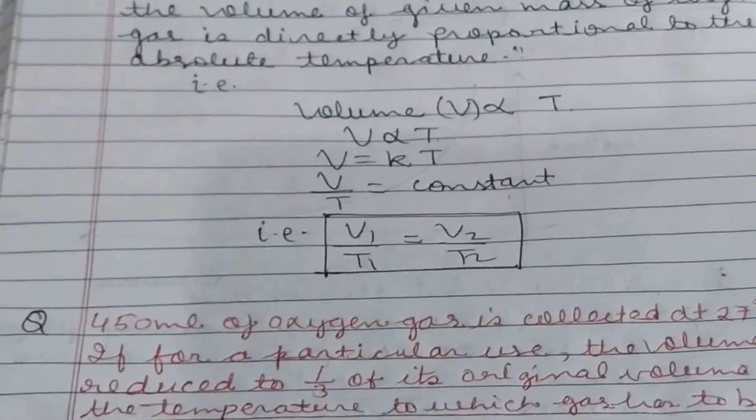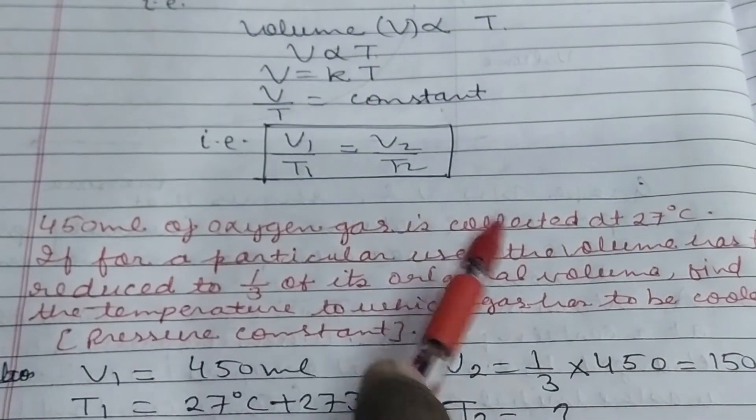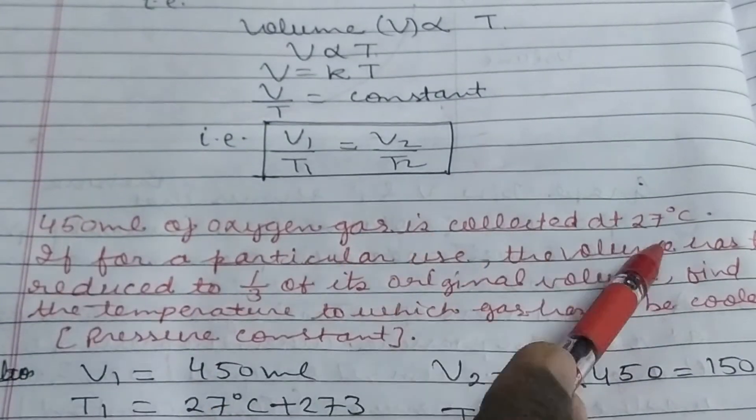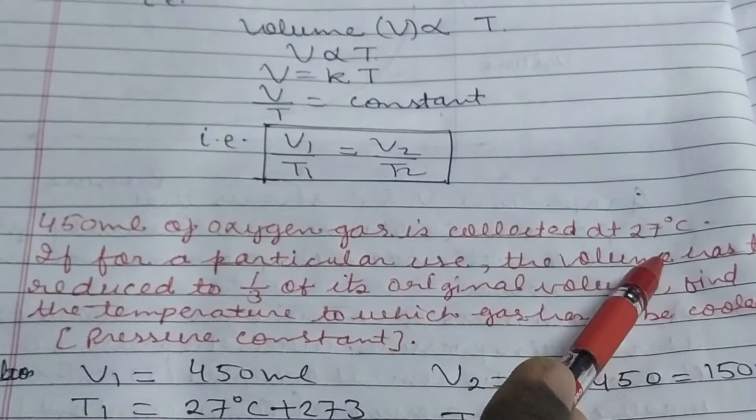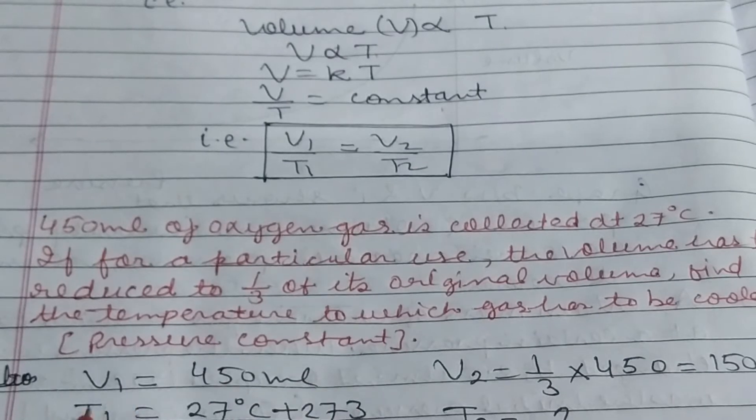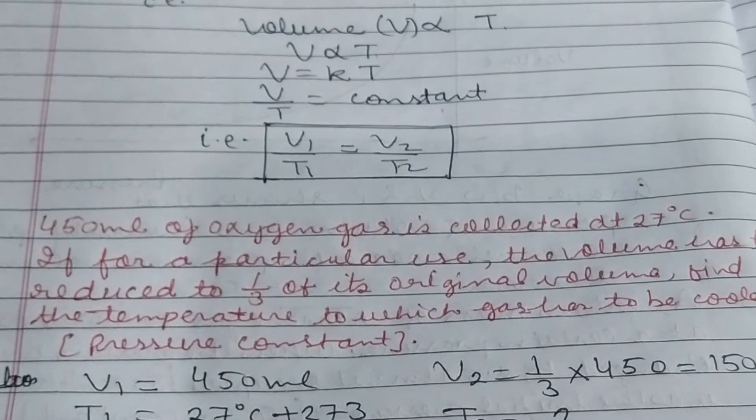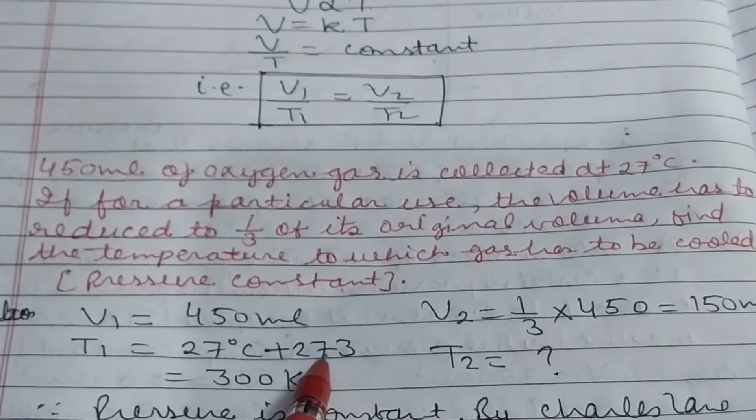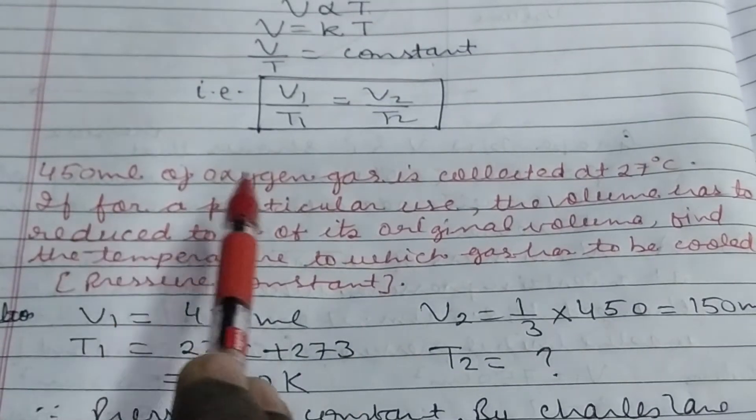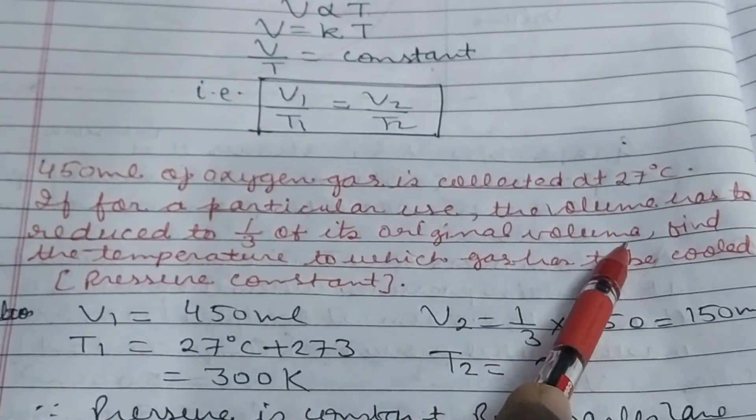The problem: 450 ml of oxygen gas is collected at 27 degree Celsius. The data is complete: initial volume and temperature are given. Note in short form: V1 is 450 ml, T1 is 27°C. Convert Celsius to Kelvin by adding 273, giving 300 Kelvin. If the volume has to reduce to one third original volume, note the wording carefully.